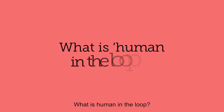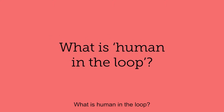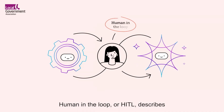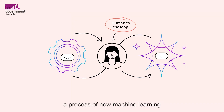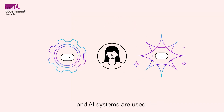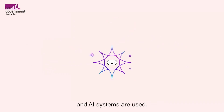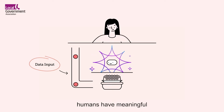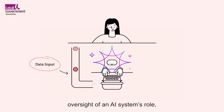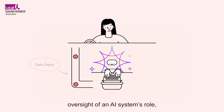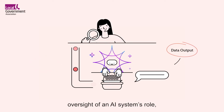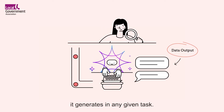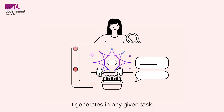What is human in the loop? Human in the loop, or HITL, describes a process of how machine learning and AI systems are used. Human in the loop ensures humans have meaningful oversight of an AI system's role, the data it uses and the outputs it generates in any given task.